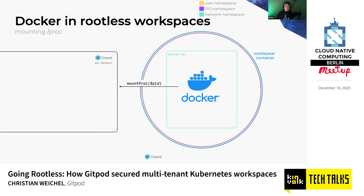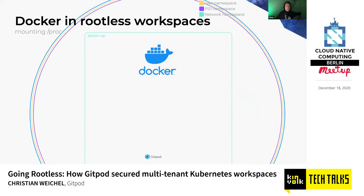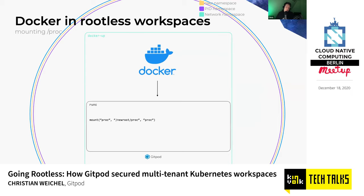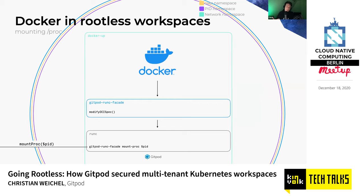Now we have a network namespace to run Docker in. But Docker also needs to mount proc — Docker will start new containers which want their own proc because they're in their own PID namespace. We cannot just mount proc for the same reason as before. To make this happen, we reuse the mount proc mechanism we used for the workspace container. We register a runc facade — a Gitpod runc facade — which modifies the OCI runtime spec before it's passed to runc, adds an OCI lifecycle hook, then passes it on to runc. runc calls this hook, which in turn calls workspace daemon to actually mount the proc filesystem.